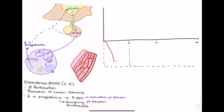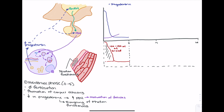These falling progesterone levels are also going to lead to sloughing of the stratum functionalis. As progesterone levels fall, we see this layer of the stratum functionalis become sloughed off where the spiral arteries contract, leading to death of that tissue, which causes the bleeding associated with menstruation. We usually see around 100 to 150 milliliters of blood associated with the menstrual phase. Graphically, in the menstrual phase of days 0 to 5, we see a decrease in progesterone levels, which leads to an increase in follicle-stimulating hormone, and an increased level of GnRH.